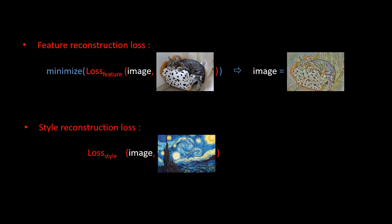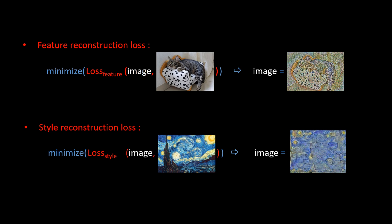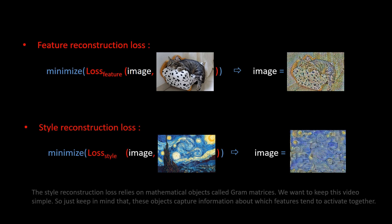But, instead of comparing the features themselves as we did before, we compare how the features correlate between each other. Like we did for the feature loss, we can construct a new image, by minimizing the style loss between this image, and the style image. Here, the features extracted by the whole four layers are used. Notice how the image we get, preserves the stylistic features of the original image, but not the spatial structure.